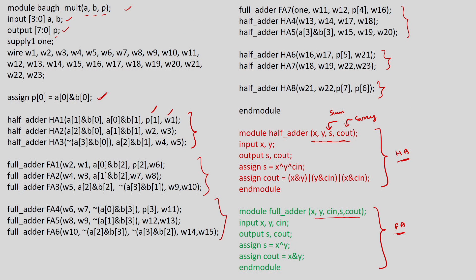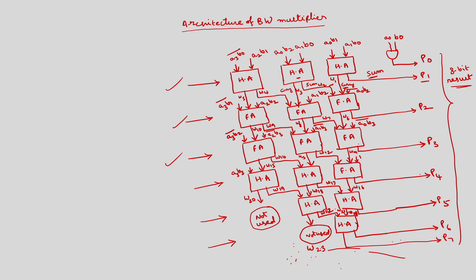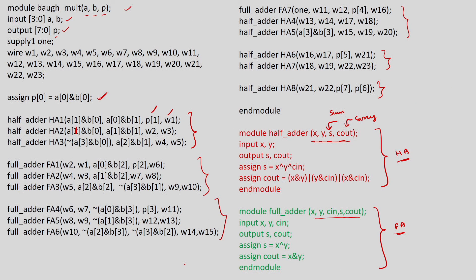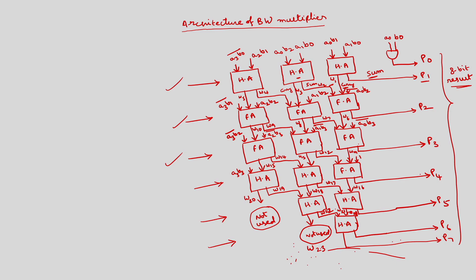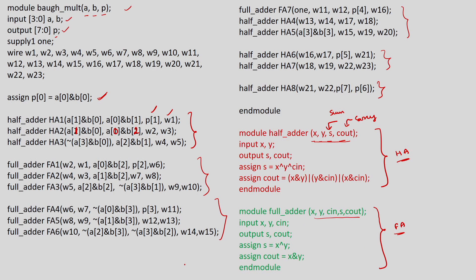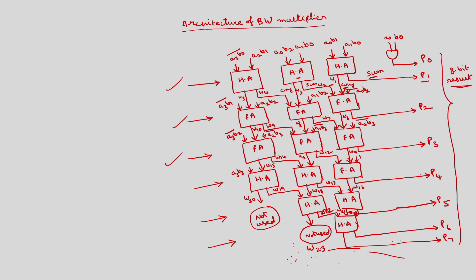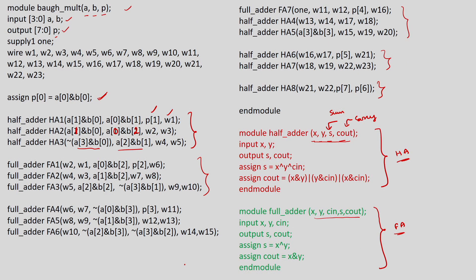This half adder has inputs A0·B2 and A1·B0. The second half adder has inputs A1·B0 and A0·B2. The third one has inputs A3·B0 and A2·B1, with A3·B0 bar. This is the complete main code for the Booth multiplier.